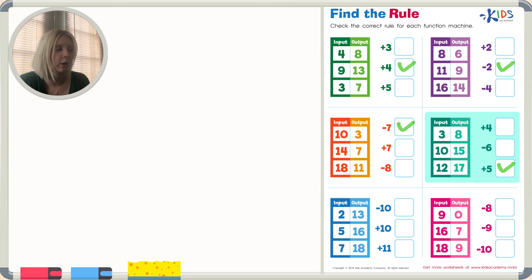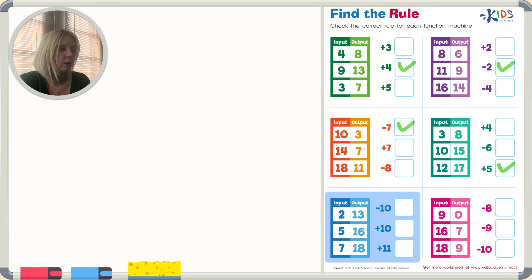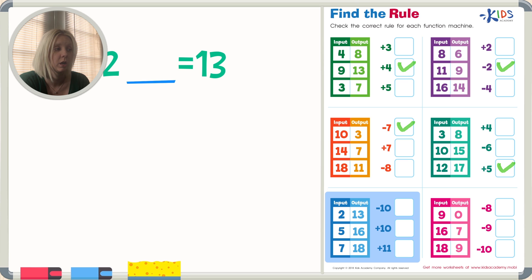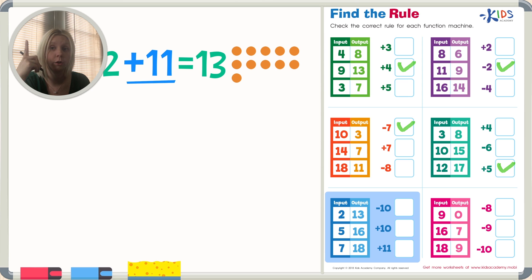Now let's go to our blue function machine. Input starts with 2, we do something to get 13. Are we adding or subtracting? Since 13 is a bigger number, we're going to add. Am I adding 10 or 11? I think 10 plus 2 is 12, so it's probably 11. Let's try plus 11: counting on from 11 — 11, 12, 13. Yes, that's correct.